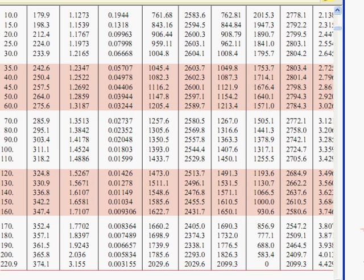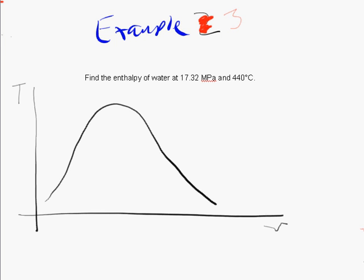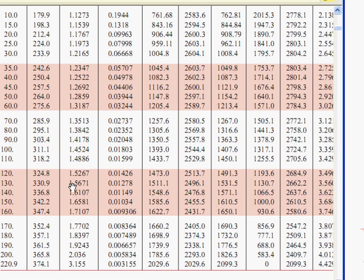So, let's represent that on the TV diagram, just to make it absolutely clear. So, there is a constant pressure curve for 17.32 MPa. That's quite a high pressure. The saturation temperature at that pressure is around about 352 to 357. So, it's about 353, let's call it. 353.